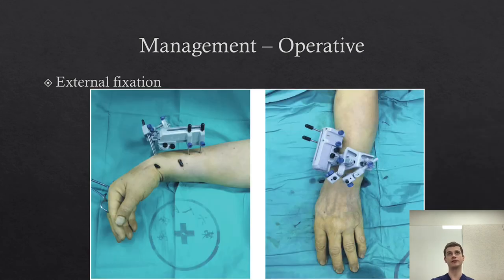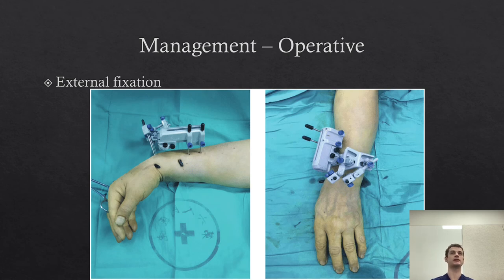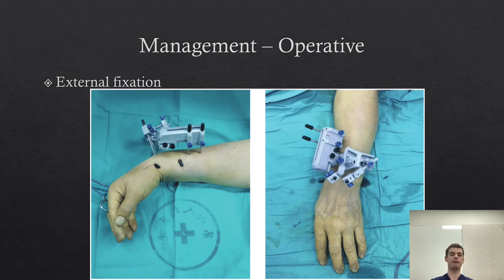The third main operative method is external fixation. There are many different models, but the principle involves rods passing through the fracture fragments, similar to K-wires but larger in calibre. The external apparatus allows more accurate manipulation by placing the rods in certain orientations and can be removed afterwards. However, for the patient it involves open tracks into the bone. External fixation is generally reserved for highly comminuted fractures, medically comorbid patients, or open fractures where you don't want internal metalware. Nevertheless, external fixation often has very good outcomes if used appropriately.